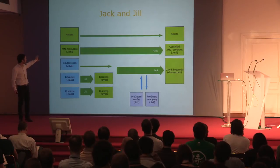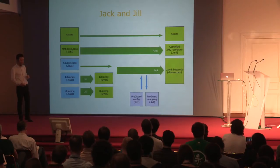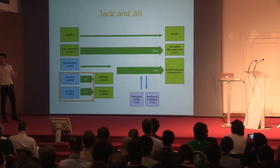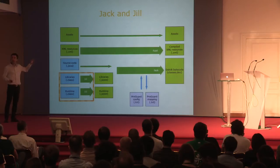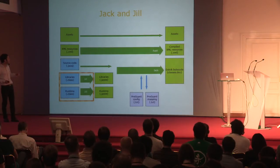So Jack can combine the Java source code and the JACE files to produce Dalvik bytecode. An interesting observation is that this diagram is already greener than when I started with the first diagram, so there is a lot more Google technology in this than Oracle technology.